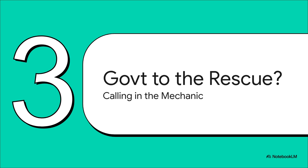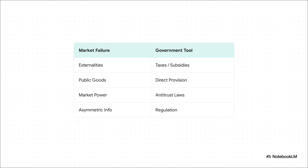So our robot is broken in one of these four ways — it's a mess. Who do you call? In economics, the answer is often the government. They're supposed to be the mechanic that comes in, diagnoses the specific glitch, and tries to fix it. And a good mechanic always uses the right tool for the right problem.